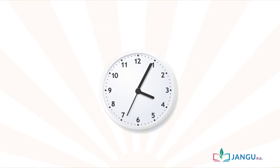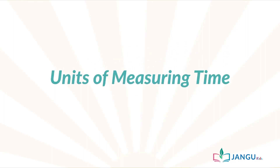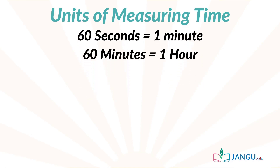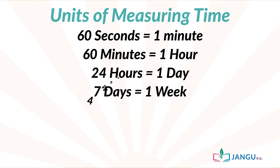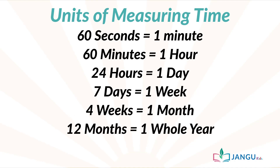We count seconds like this: 1, 2, 3, 4, and so on. Remember the units of measuring time? 60 seconds make 1 minute. 60 minutes make 1 hour. 24 hours make 1 day. 7 days make a week. 4 weeks make 1 month. And 12 months make 1 whole year.